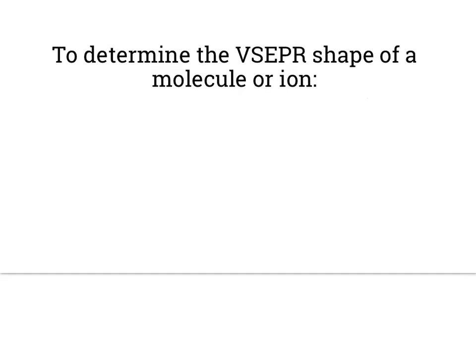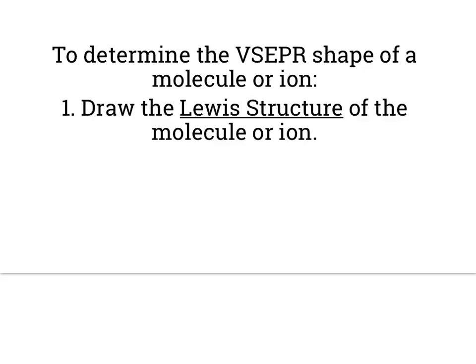To determine the VSEPR shape of a molecule or ion, we have a few steps. They will involve a decent bit of memorization. But our very first step is to draw the Lewis structure of whatever molecule or ion we're dealing with. I have another video helping you make Lewis structures if you're unsure how to do this.